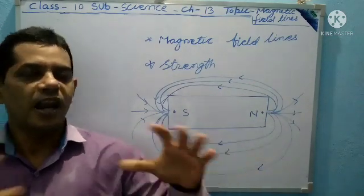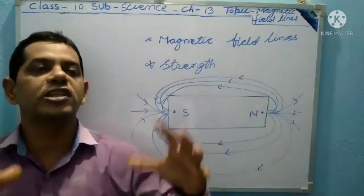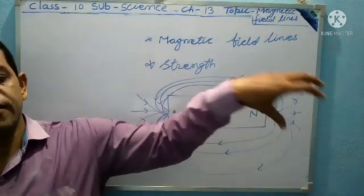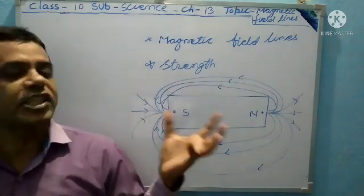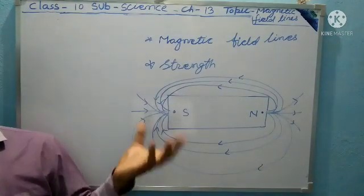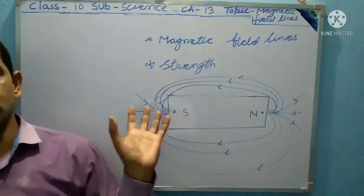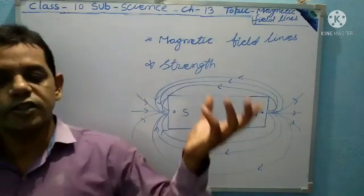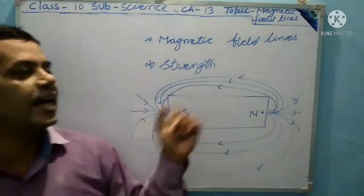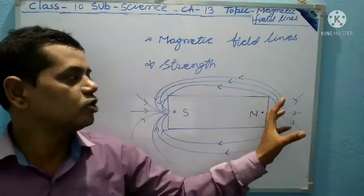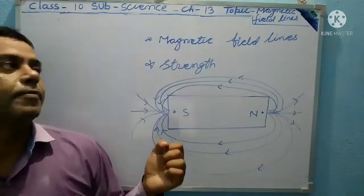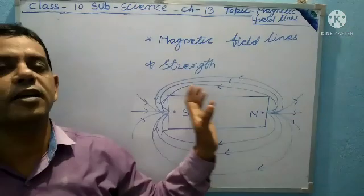Such strength is large for a large magnet. So if the strength is large, its magnetic field is large. Magnetic field is a quantity that has both magnitude and direction. Some magnets have higher strength, some have lower strength — it depends on the field.